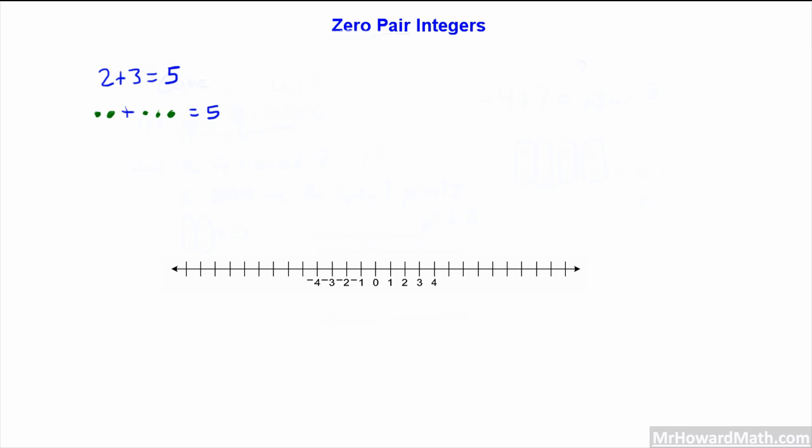Now that we have that established, let's take a look at what a zero pair really is. We can represent a positive 1 as a green circle, and a negative 1 with a red circle. This right here is, by definition, a zero pair. I'm going to circle the zero pair. This is a single zero pair.